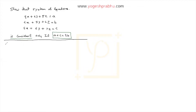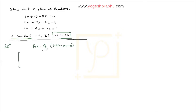Let's begin solving this question. If you observe, it is of the type Ax = b, also called a non-homogeneous system of equations — the right-hand side is non-zero, which makes it non-homogeneous. We can write it in the form Ax = b.